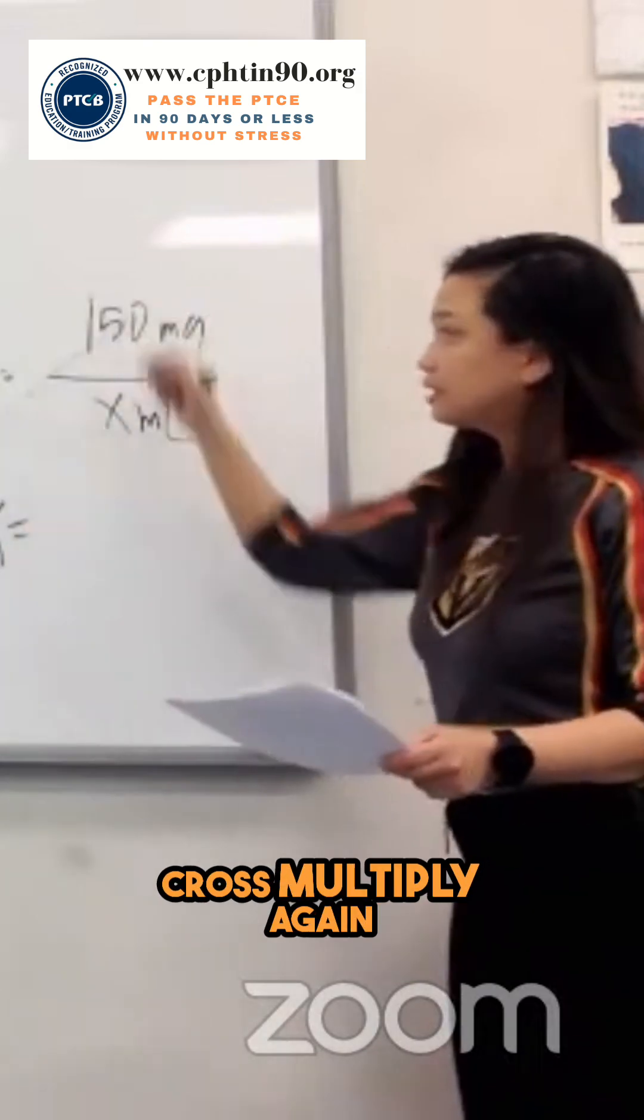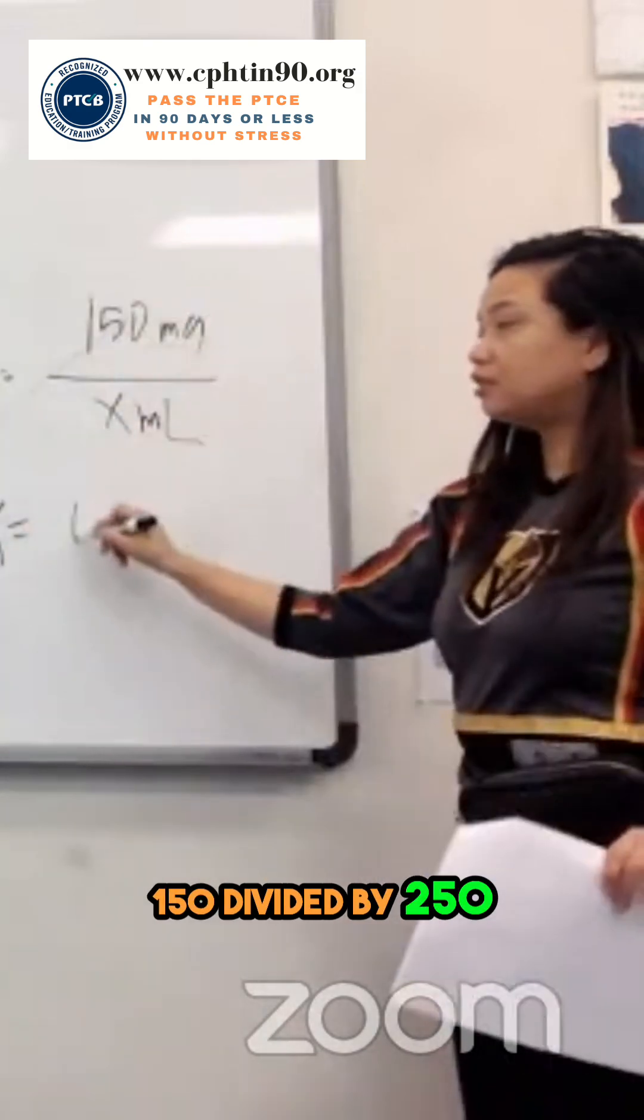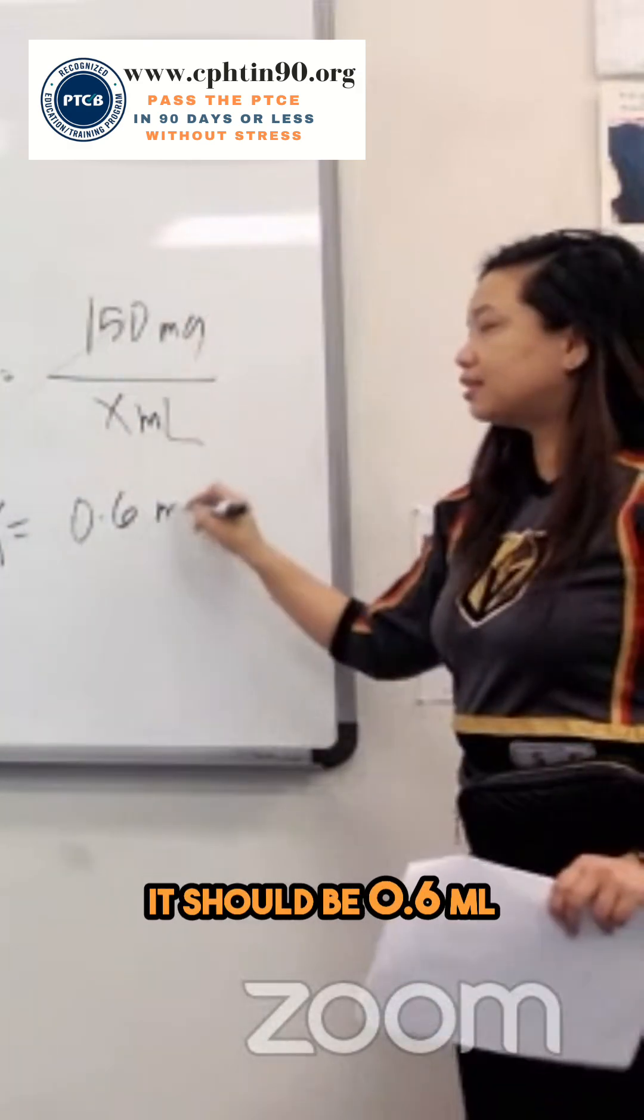So my X will be, cross multiply again, 150 divided by 250, it should be 0.6 ml.